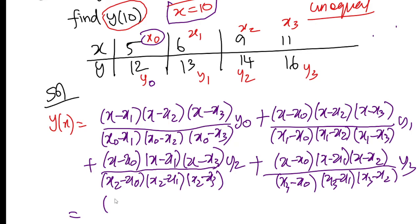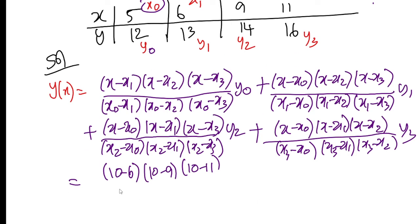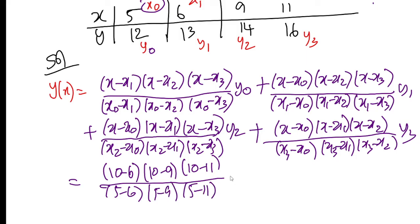Now substituting x equals 10: for the first term, the numerator is 10 minus 6, 10 minus 9, 10 minus 11. The denominator uses x0 equals 5, so we put 5 minus 6, 5 minus 9, 5 minus 11. Then we move to the next term.